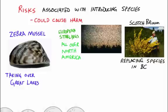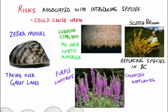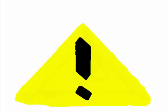Purple loosestrife is a plant that colonizes wetlands and pushes out native plants. When it pushes out the wetland plants, it also pushes out the species that rely on those plants, so its effects are felt all over the ecosystem. Many people like to plant purple loosestrife in their gardens because it's a pretty purple flower.